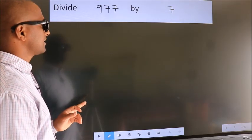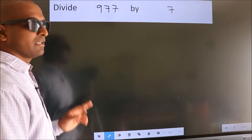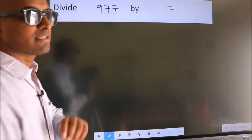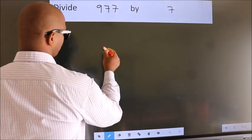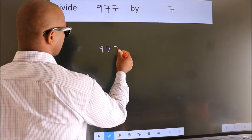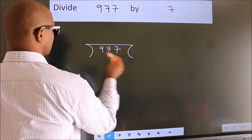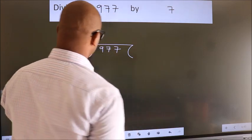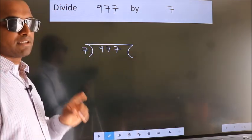Divide 977 by 7. To do this division, we should frame it in this way. 977 here, 7 here. This is your step 1.